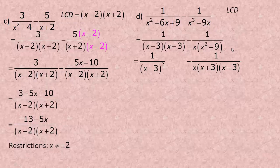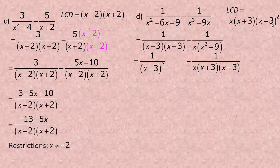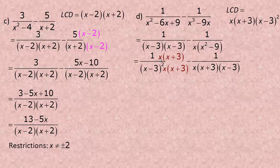The LCD must have x minus 3 squared (taking the larger power), an x, and an x plus 3 — all factors present. So the LCD is x times x plus 3 times x minus 3 squared. The first fraction has x minus 3 squared but is missing x and x plus 3, so multiply top and bottom by x times x plus 3. The second fraction is missing the x minus 3 factor to make it squared, so multiply by x minus 3 top and bottom.